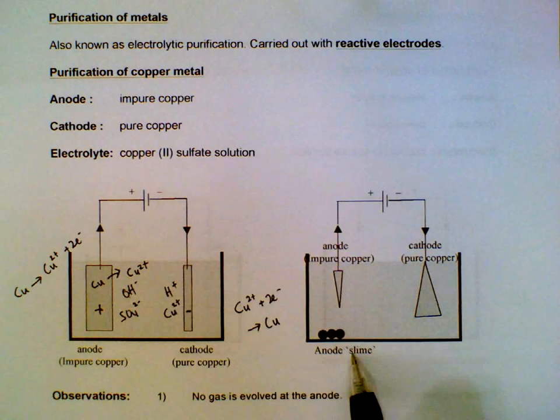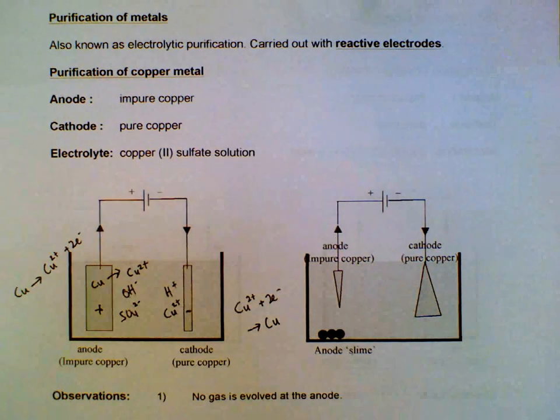The anode slime here, it could be other precious metals like silver and all that, which they can recover and also sell for more profits.